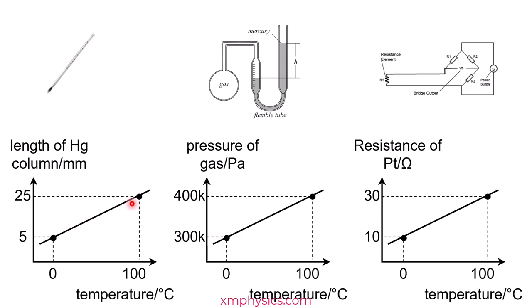Why? Because we assume that the thermometric property varies linearly with temperature. Is that assumption true? Well, to be fair, all these three properties do vary pretty linearly with temperature between the ice points and steam points.